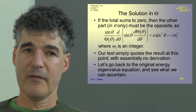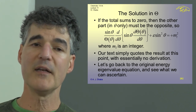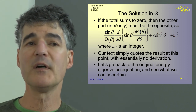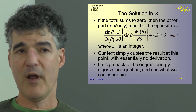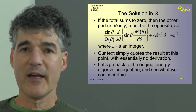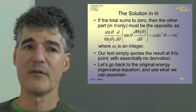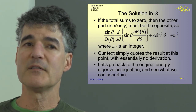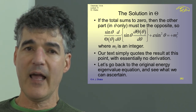If this first part sums to minus M_L squared, then the other part must sum to plus M_L squared, where M_L is an integer. So we have this rather intimidating differential equation in theta with sine theta and the derivative of the function theta, plus epsilon sine squared theta equal to M sub L squared.